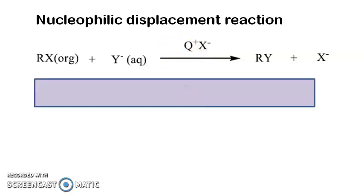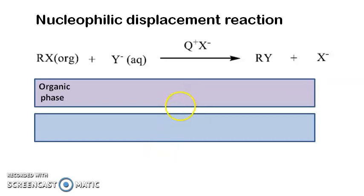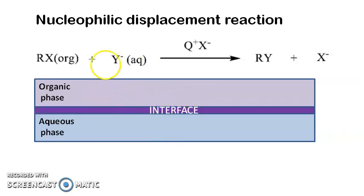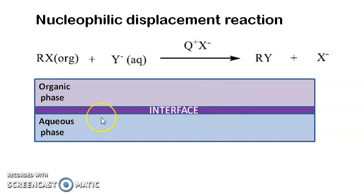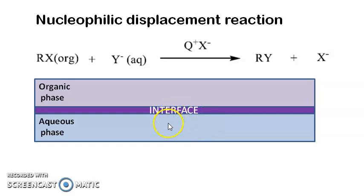We have the organic phase and the aqueous phase. The junction between the organic phase and the aqueous phase is called the interphase. It is here where the reaction will happen. At the interphase, a concentration gradient of the components forms. On one side you have the organic phase with the substrate soluble in organic phase, and on the other side you have the aqueous phase with the substrate soluble in aqueous phase.